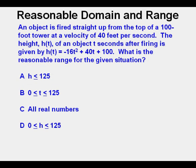Here's another problem. An object is fired straight up from the top of a 100-foot tower at a velocity of 40 feet per second. The height, h(t), of an object t seconds after firing is given by h(t) = -16t² + 40t + 100.